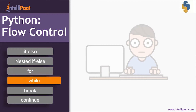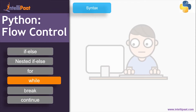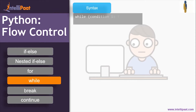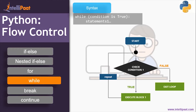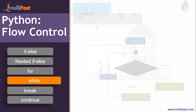Next is the while loop. The syntax is: while condition is true, then execute the set of statements under the while. Looking at the flow — start, check the condition. If true, execute block one and then repeat the loop until the condition is true. If the condition is false, just exit the loop.